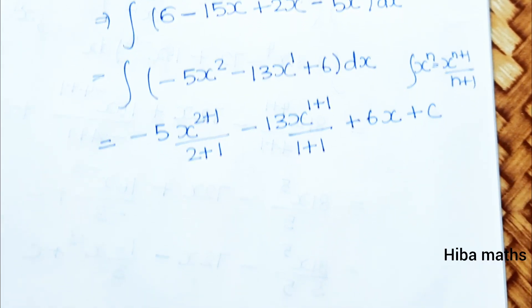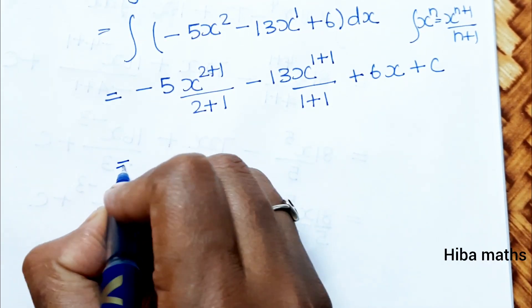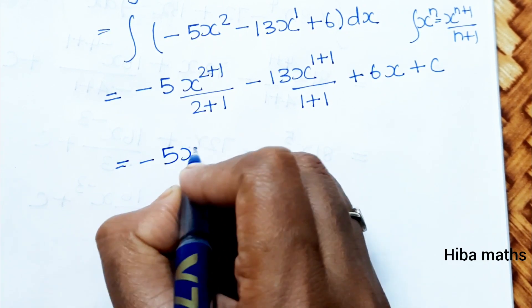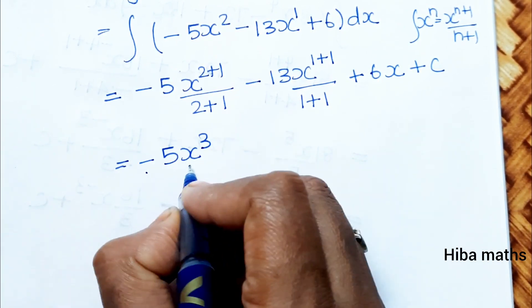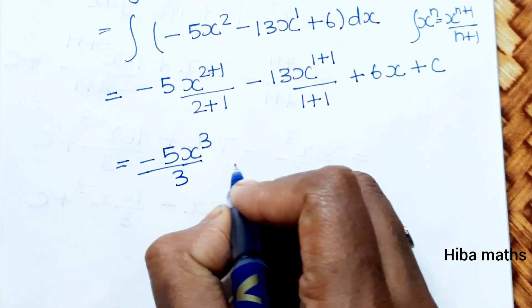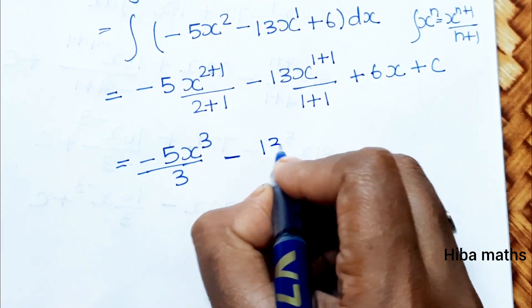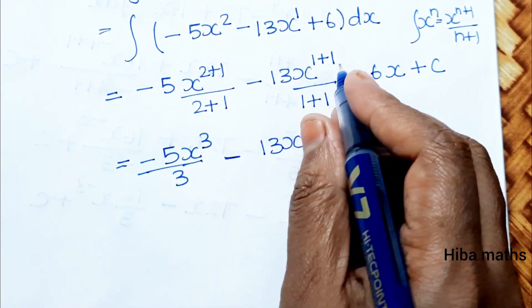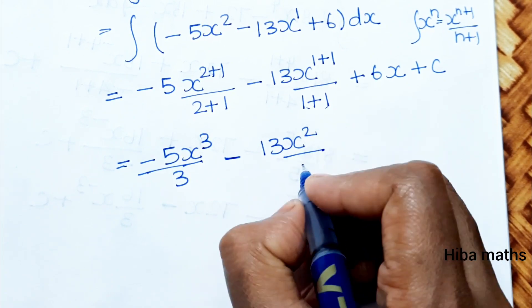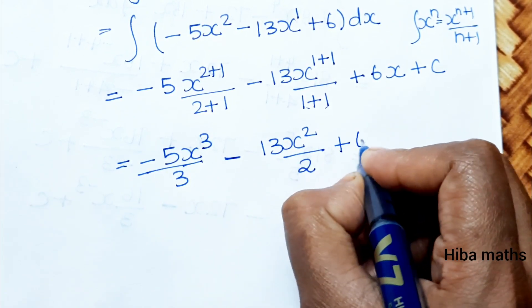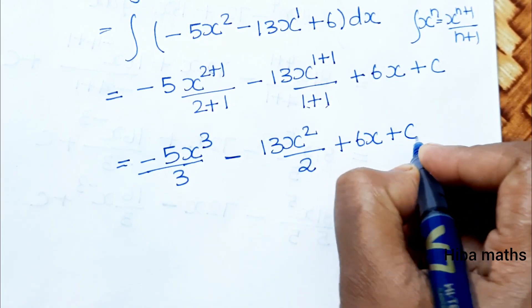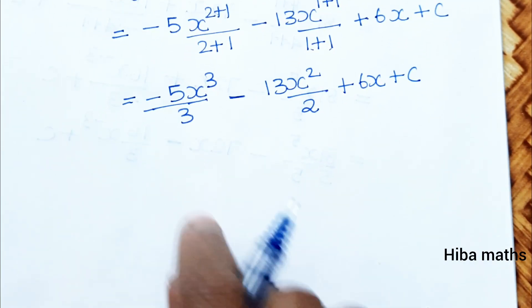Plus c. Next line: -5x^(2+1)/(2+1) which is -5x³/3, minus 13x^(1+1)/(1+1) which is -13x²/2, plus 6x plus c. This is our answer.